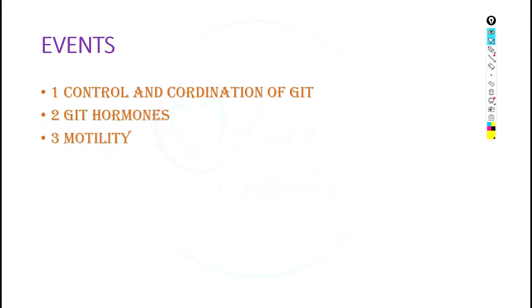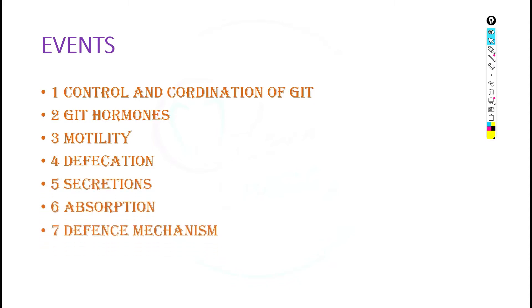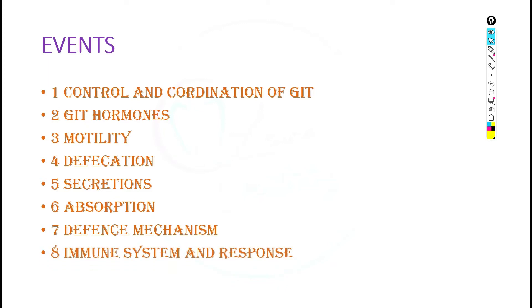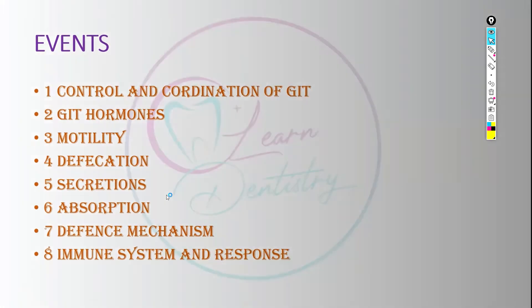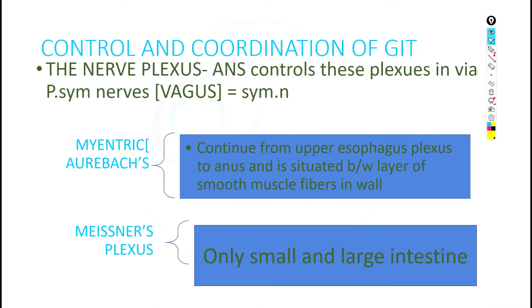Moving forward, we will be studying about control and coordination of GIT, GIT hormones, motility, defecation, secretions, absorptions, defense mechanism, immune system and response. In this part one, we will be studying up to secretions, starting with control and coordination.